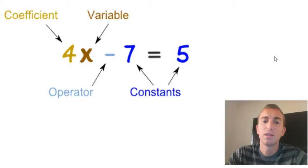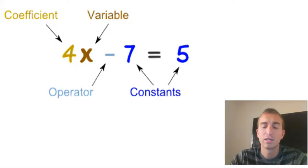And we'll look at an example right here. In this equation, we have 4x minus 7 equals 5. The variable, again, is going to be the letter. In this case, it's x. The coefficient is going to be the number placed directly in front of that variable, and it's multiplying that variable. So it's saying 4 times x. The two constants are going to be the two numbers that stand alone by themselves. In this case, we have 7 and 5. And the operator is just going to be negative for this equation.